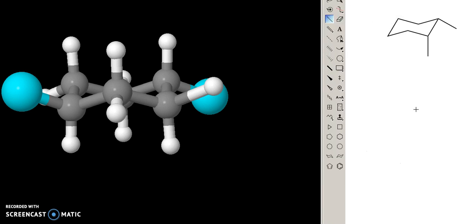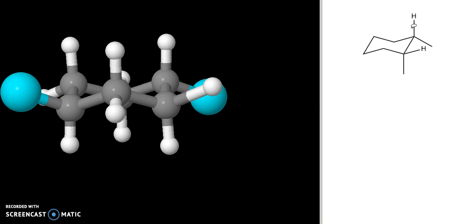If we look at one last example, if we want to translate this chair form into the more planar line angle structure for cyclohexane, we can do the following. I would suggest we start by filling in our hydrogens. What I see is that this hydrogen is clearly axial and up, so this is pointed down.